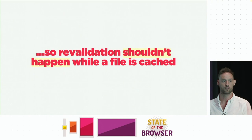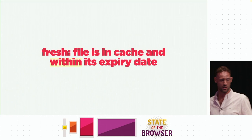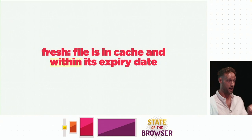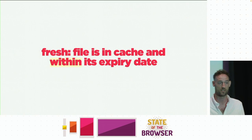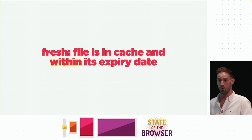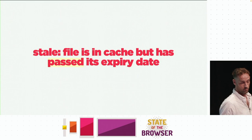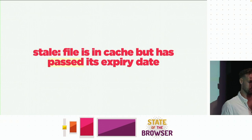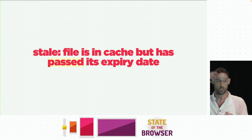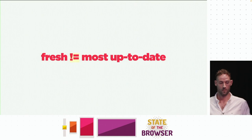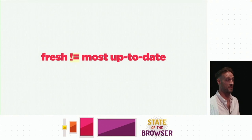The next concept is fresh and stale. Fresh is a file that is in cache but within its expiry date. Fresh does not mean the file is up to date — all fresh means is the file has been cached and the cache is allowed to reuse it. It has nothing to do with the up-to-dateness of the content. Stale is a file that is also in cache but has passed its expiry date and needs revalidating.